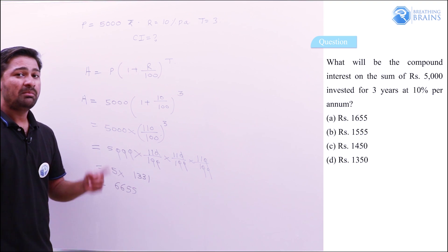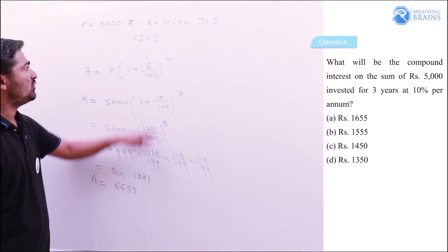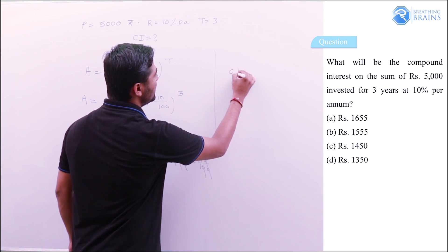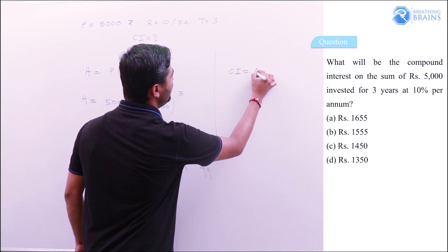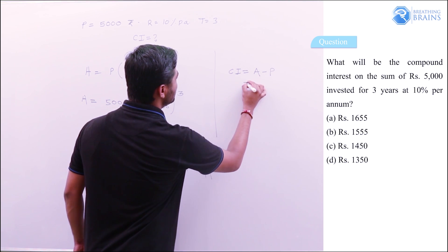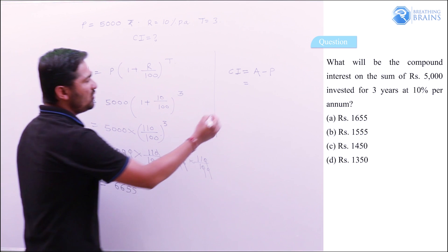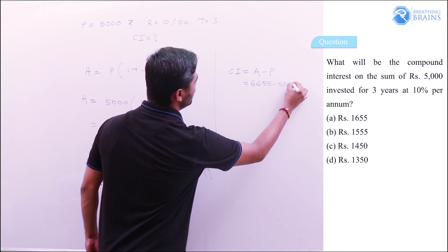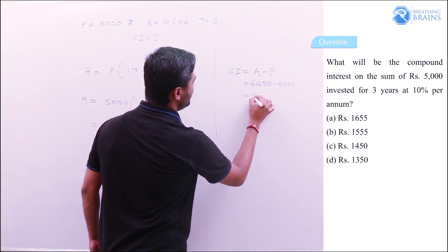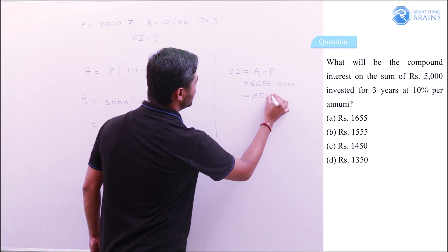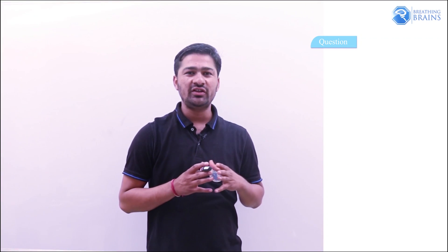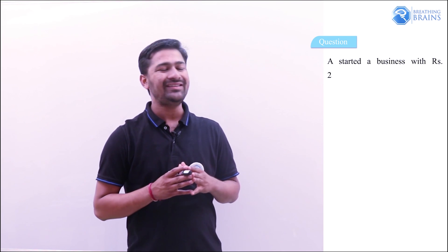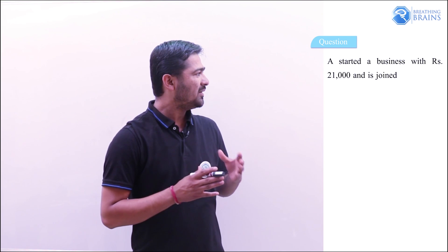We calculated the amount as ₹6,655, but we need to find compound interest. Compound Interest = Amount − Principal = 6,655 − 5,000 = ₹1,655.